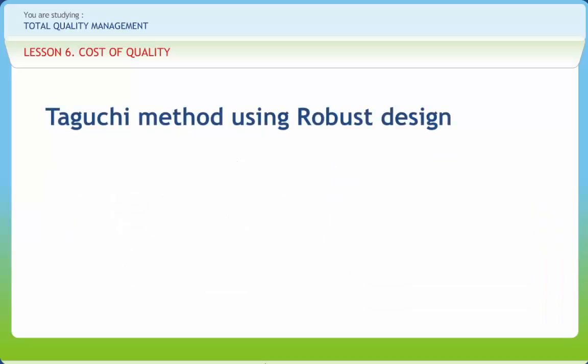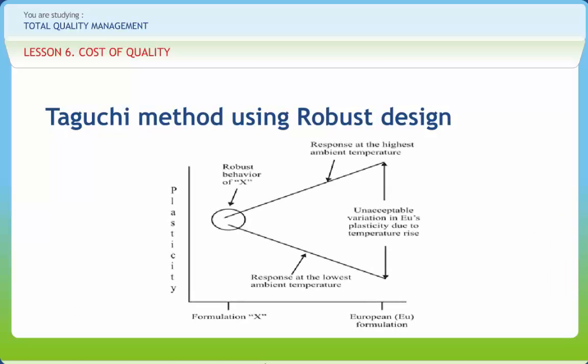The term quality engineering QE was used till recently by Japanese quality experts only. One such expert is Genichi Taguchi, who reasoned that even the best available manufacturing technology was by itself no assurance that the final product would actually function in the hands of its users as desired.